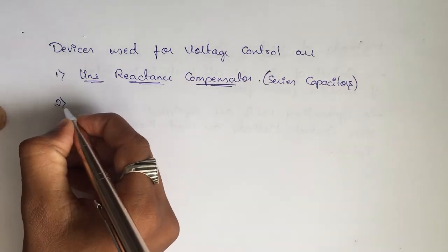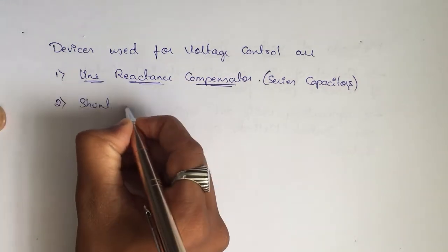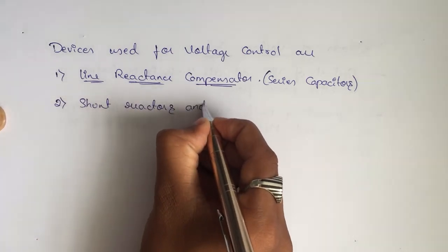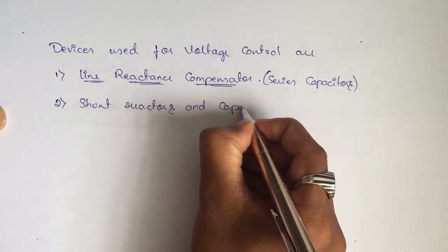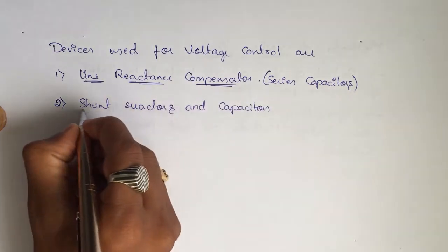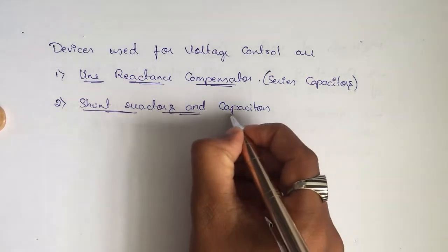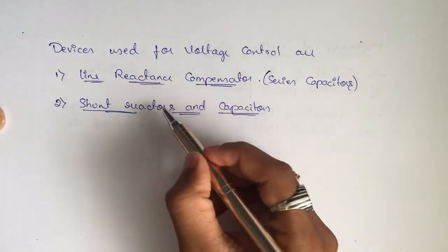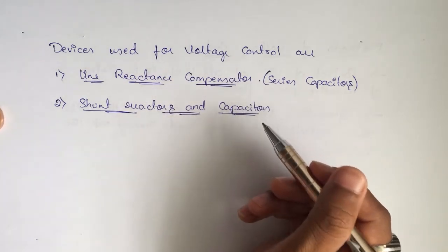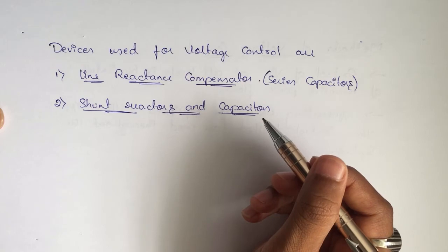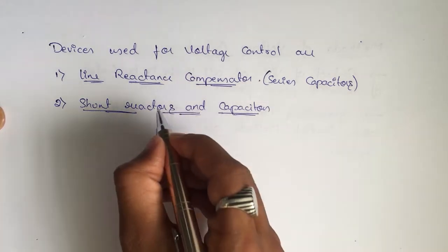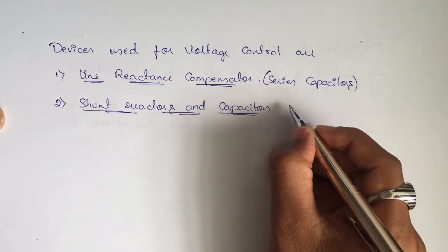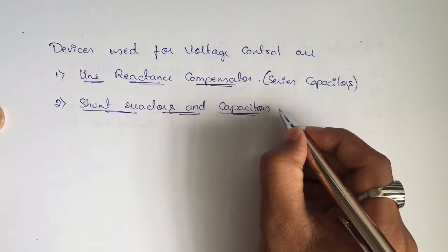Second one is shunt reactors and capacitors. Shunt reactors for leading power factors, and shunt capacitors for lagging power factors, which act as sinks and sources. Remember, reactors act as sinks and capacitors act as sources for reactive power respectively.